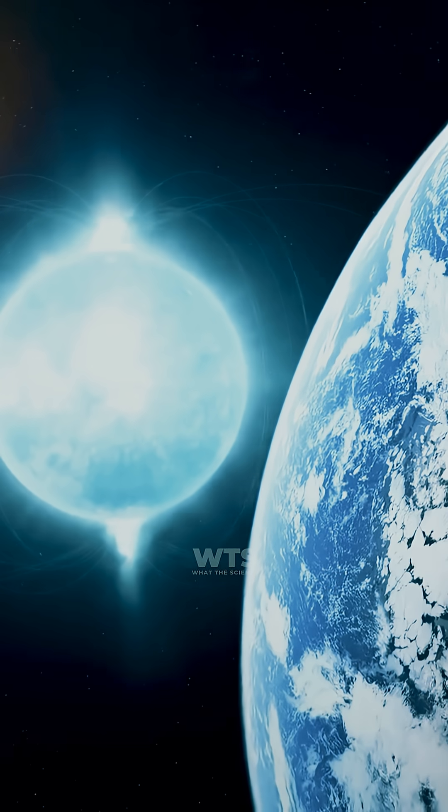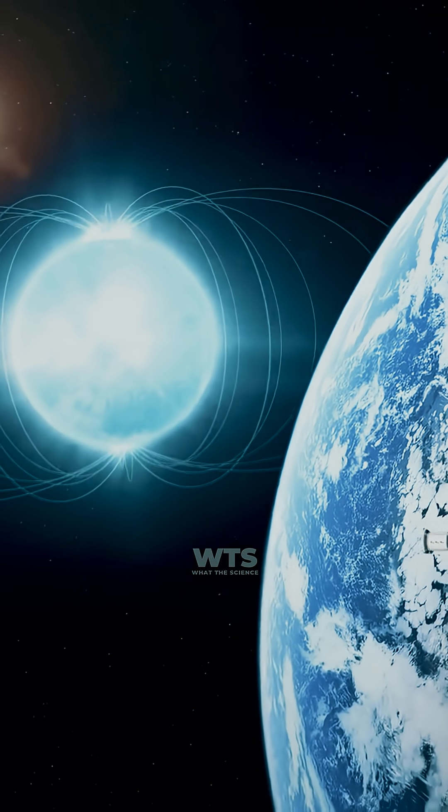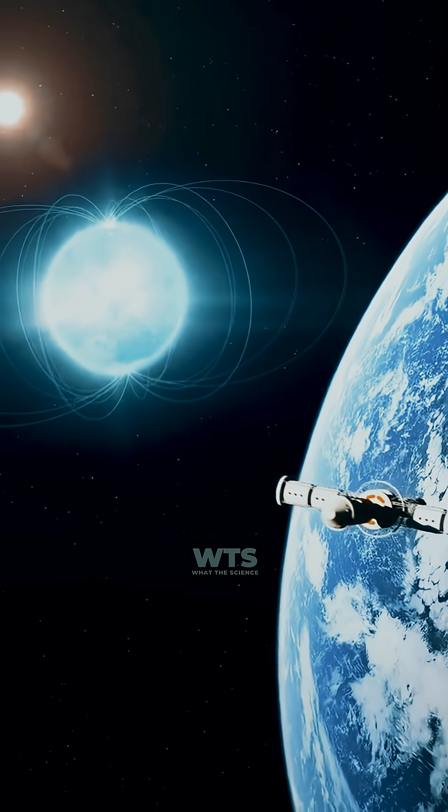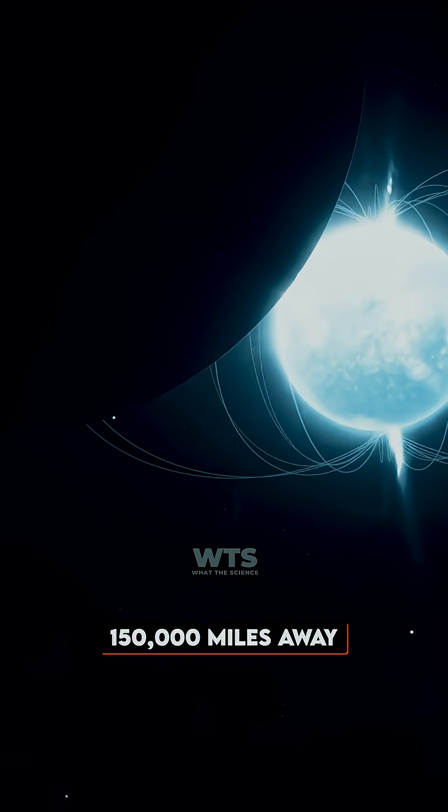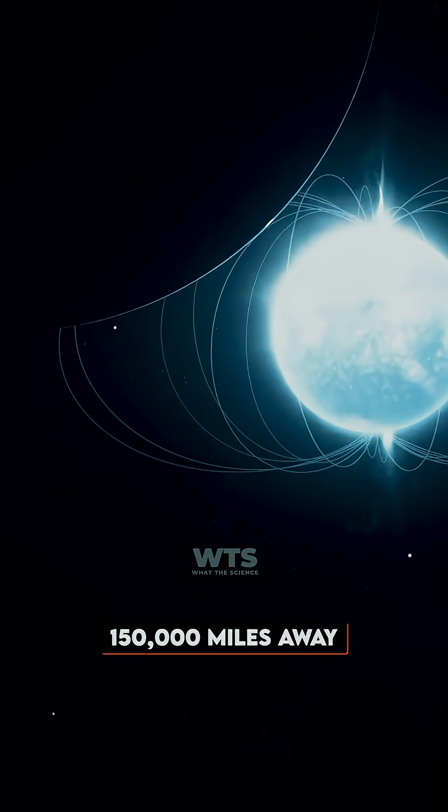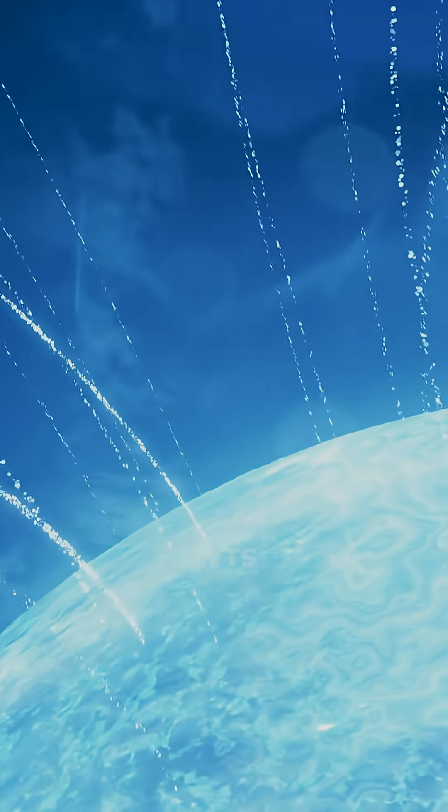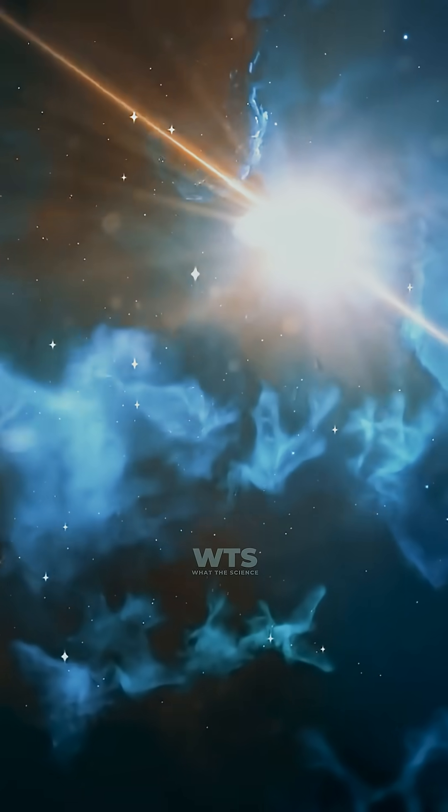Here's where it gets wild. If a magnetar existed just halfway between Earth and the moon, it would strip the iron from your blood from 150,000 miles away. The magnetic field is so intense it literally warps the atoms around it, twisting empty space itself.